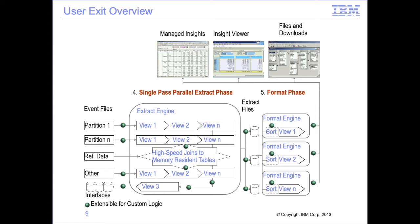Read exits stand between the actual input file and the SAFIR views. These exits can modify input records to be presented to SAFIR threads for processing. Lookup exits stand between SAFIR views and lookup data loaded into memory. Lookup exits accept join parameters and return looked-up records in response to individual joins. These exits can also be used as simple function calls which do not actually perform any lookups. For example, the exponential calculation discussed above could be written as a lookup exit.